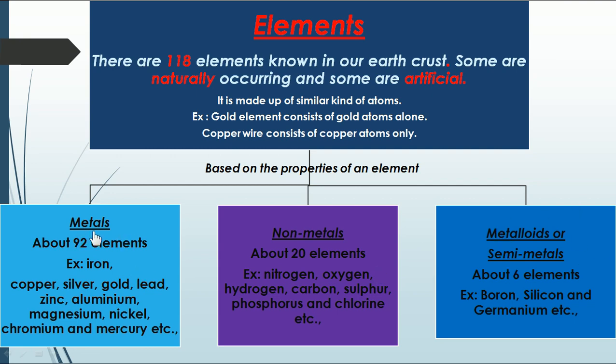What is a metal? There are about 92 metals in our periodic table. For example, iron, copper, silver, gold, chromium — all are examples of metals. For non-metals: nitrogen, hydrogen, carbon, phosphorus, chlorine, fluorine — all are non-metals.